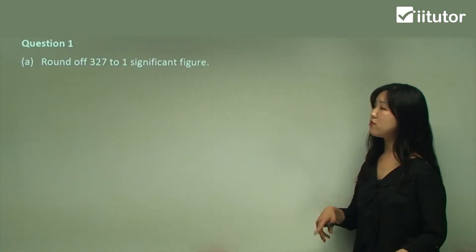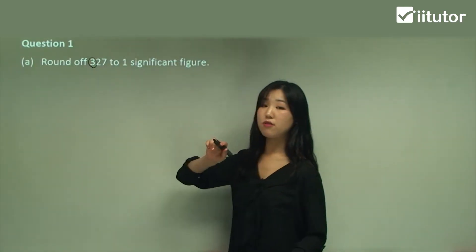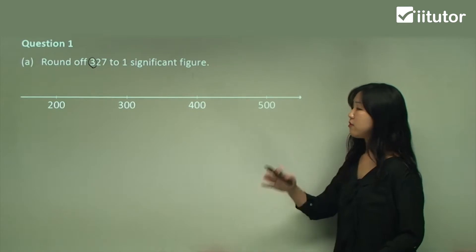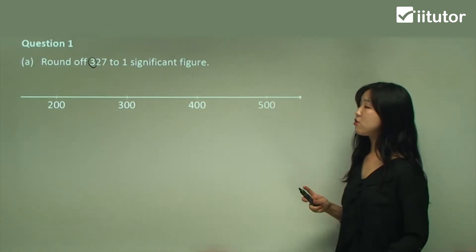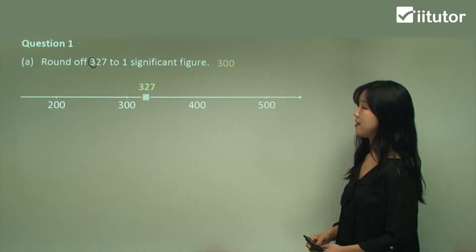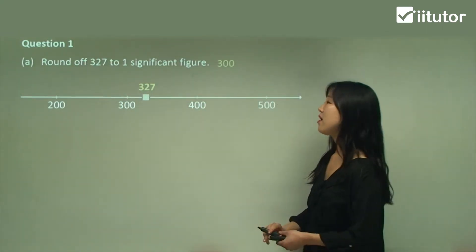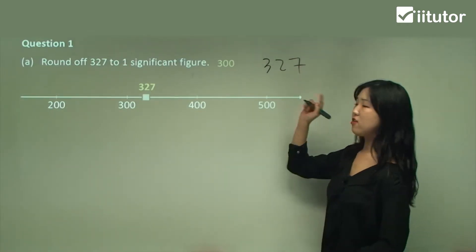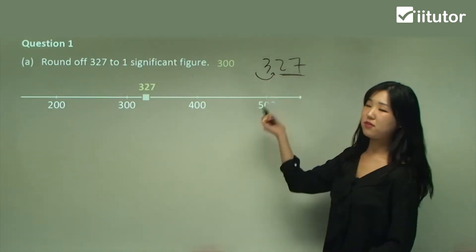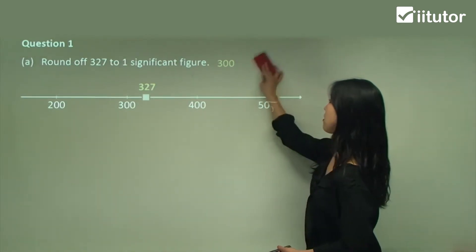Let's round 327 to one significant figure. We're only concentrating on the first number, which is the hundreds. So we go two hundred, three hundred, four hundred, five hundred. 327 is between three hundred and four hundred and it's closer to three hundred. So the answer is three hundred to one significant figure. Without the number line: we keep the three and the rest just become zeros — three, zero, zero, which is three hundred. Don't forget to round up if the next number is greater than or equal to five.